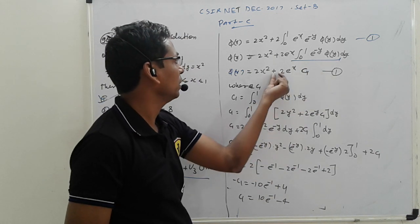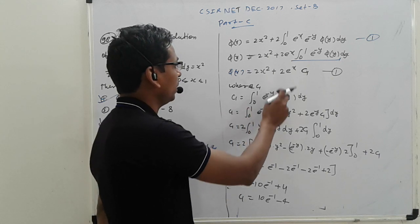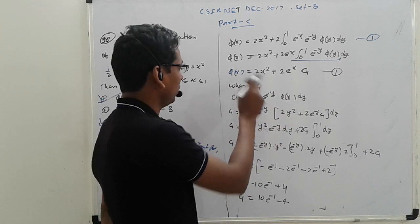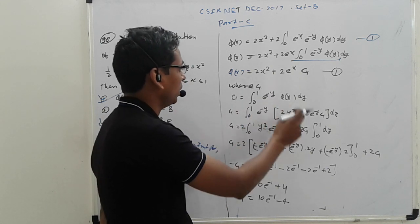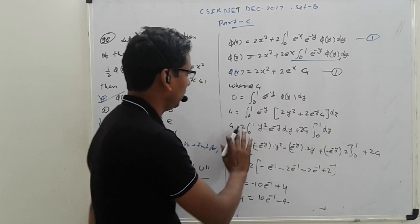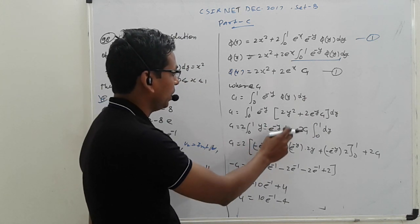Where C1, that term is just C1 2x, so where C1 is equal to 0 to 1 e raise to minus 5, 5y dy. So 5y the answer final is here: 0 to 1 raise to minus 5, 5y 2y square plus 2 e raise to y. C1 dy. Multiply 2, 0 to e raise to y square e raise to y dy.